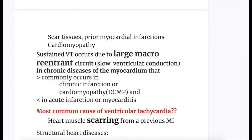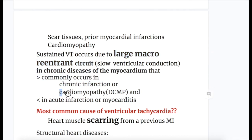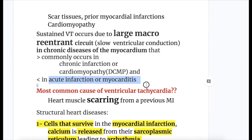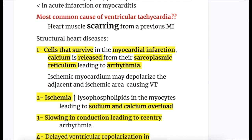Sustained ventricular tachycardia occurs due to large macro-reentrant circuits or slow ventricular conduction in chronic diseases of the myocardium — more commonly in chronic infarction or cardiomyopathy, more in dilated cardiomyopathy and less in acute infarction or myocarditis. The most common cause of ventricular tachycardia is heart muscle scarring from a previous myocardial infarction.